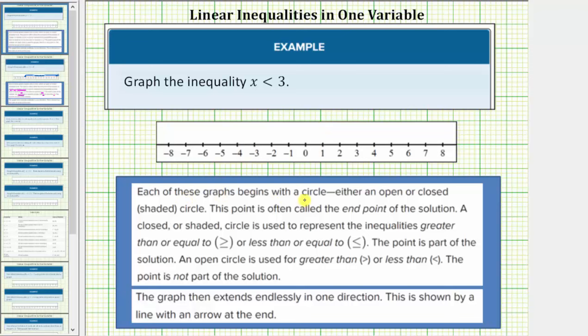Each graph will begin with a circular point, either an open or closed circular point. The point is often called the end point of the solution. A closed or shaded circular point is used to represent the inequalities greater than or equal to or less than or equal to. The reason the point or circle is closed is because the point is part of the solution.